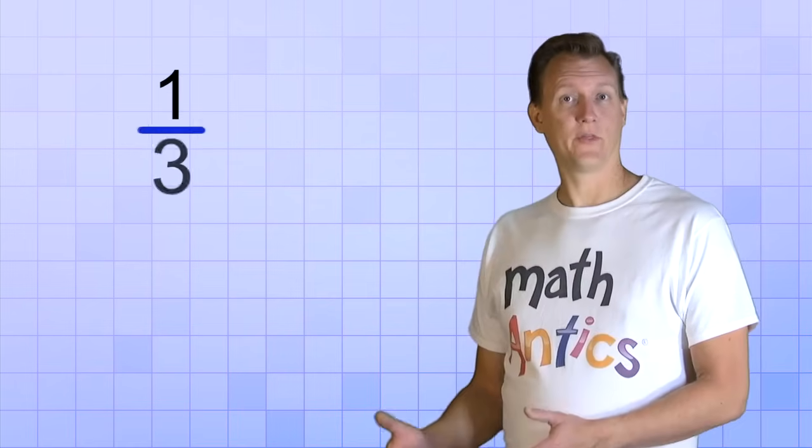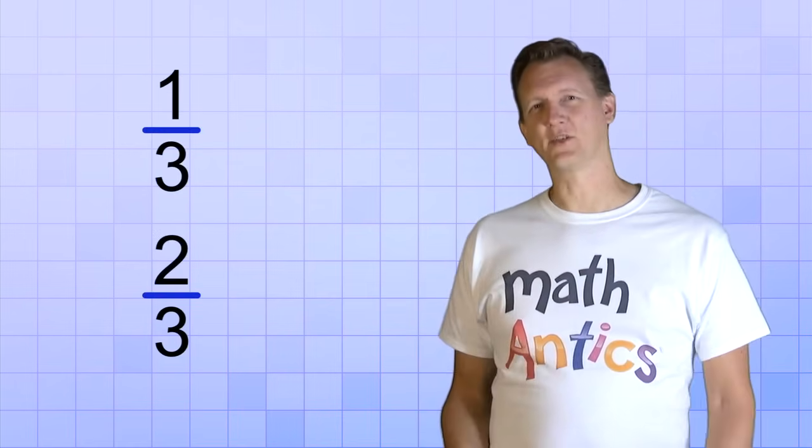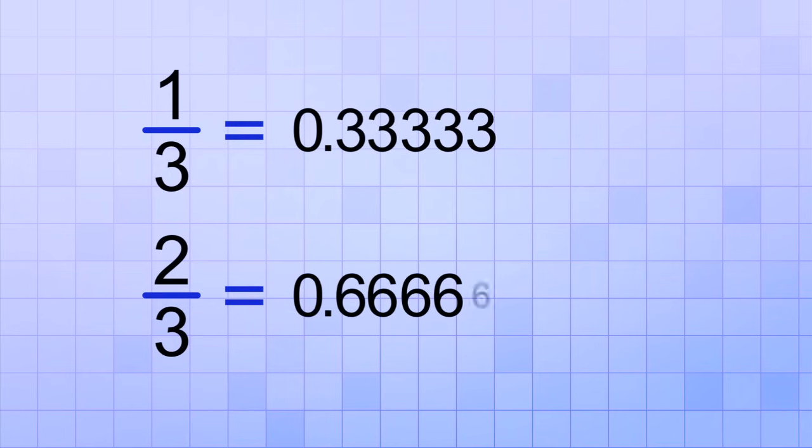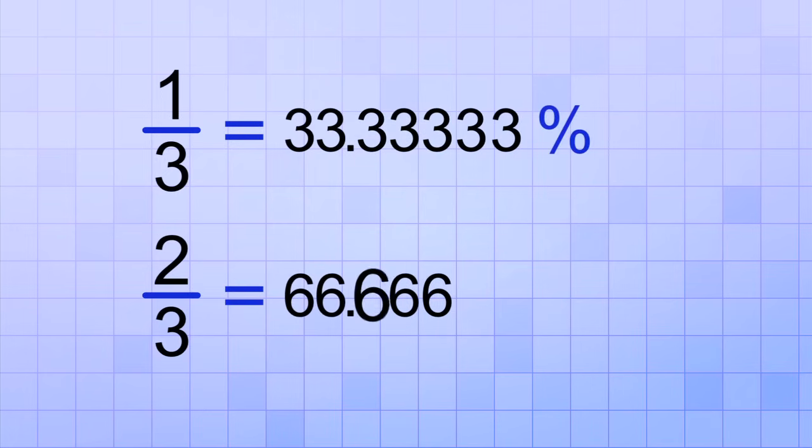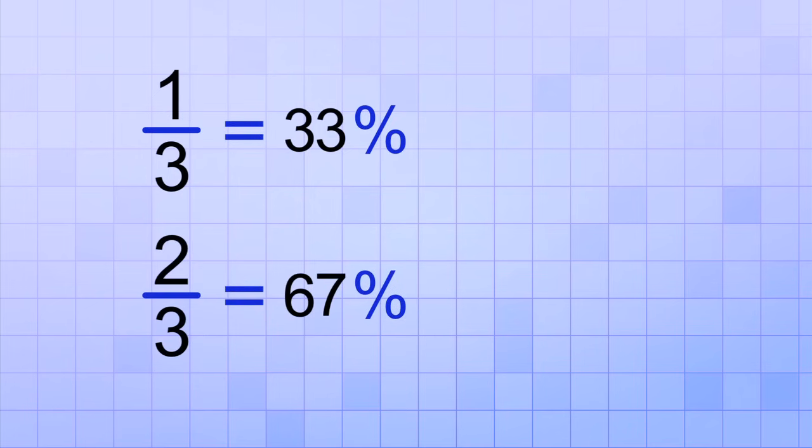The fractions 1 third and 2 thirds are also really common, but their equivalent percents are a little different. And that's because those fractions have repeating decimal values 0.33333 and so on and 0.66666 and so on, which means that the percents are also repeating. 1 third is 33.33333 percent and 2 thirds is 66.66666 percent. But you can usually just round them off to 33% and 67%.